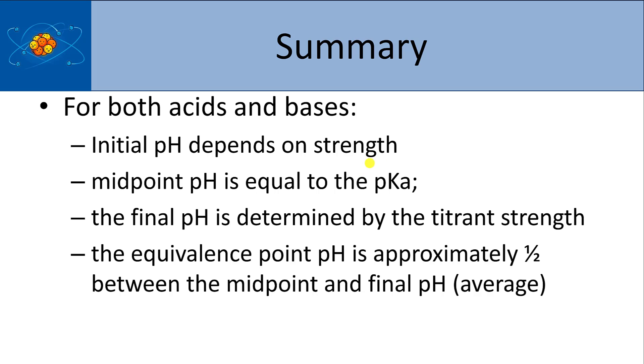And this is just some summary of the things that were similar for both acids and bases. Initial pH depends on strength. Midpoint pH is equal to pKa. Final pH is determined by titrant strength. And the equivalence point pH is approximately halfway between the midpoint and the final pH. This is what I had talked about before, the way to approximate what the pH is.